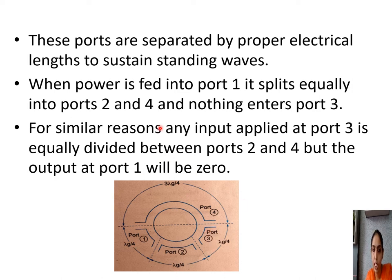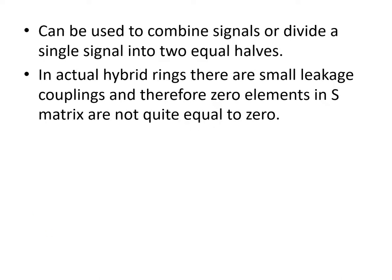Similarly, if input is applied at port 3, it again splits in anticlockwise and clockwise directions to ports 2 and 4, but the output at port 1 will be zero. We can use such a ring either to combine signals or divide a signal into two equal halves.